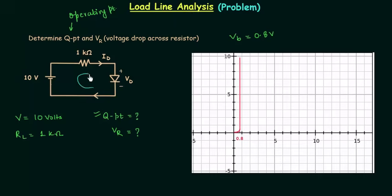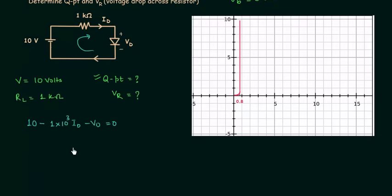I will use KVL — Kirchhoff's voltage law. We have: 10 minus 1×10³ × Id minus Vd equals 0. Rearranging this gives: 10 equals 1×10³ × Id plus Vd.